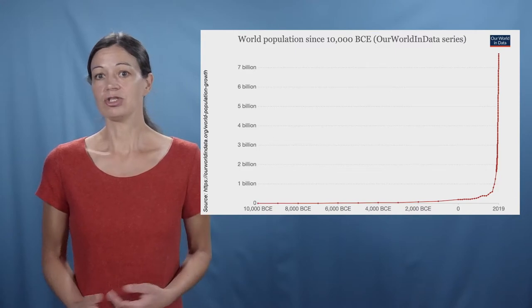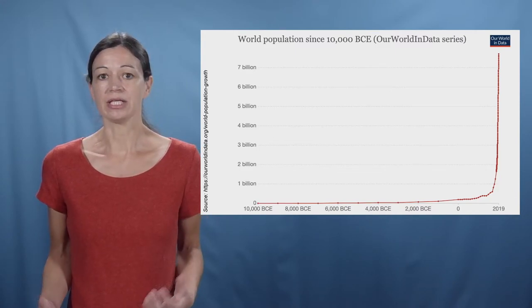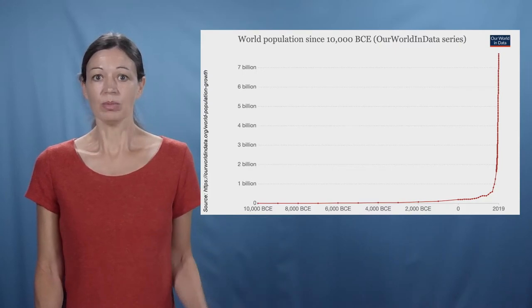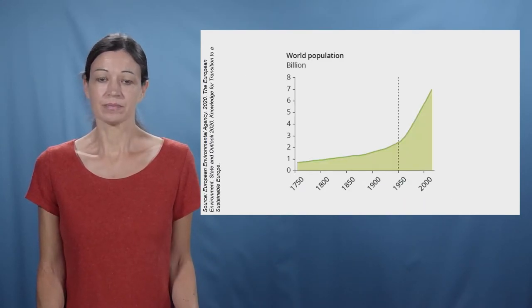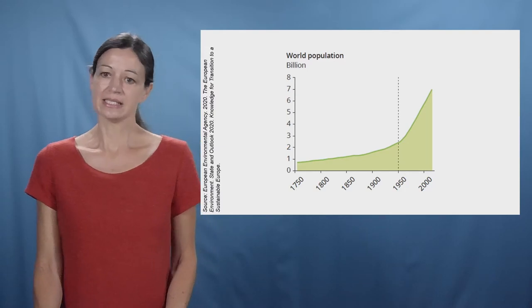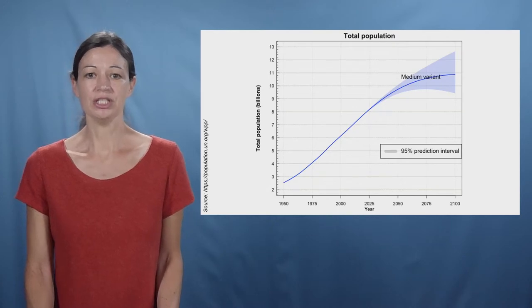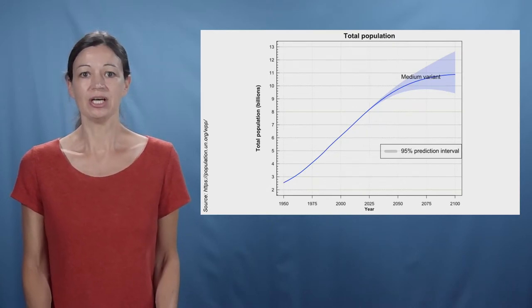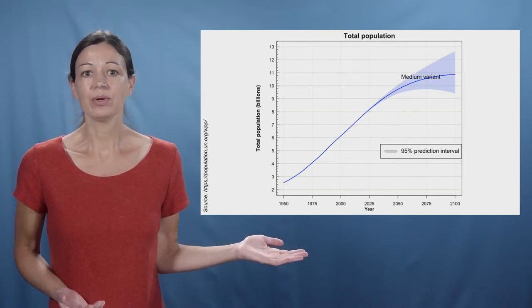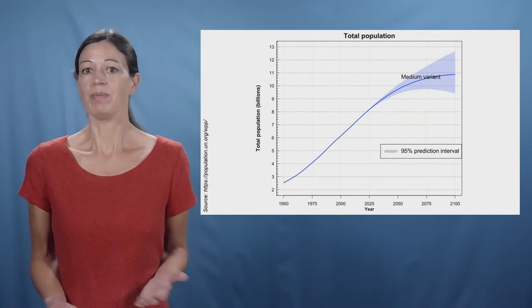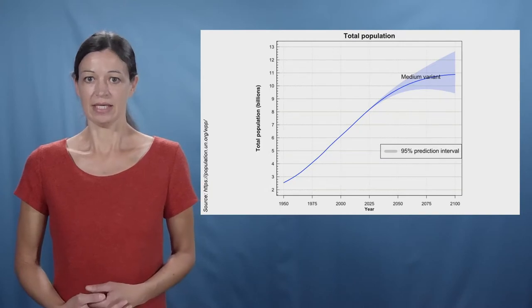One of the global mega trends is a growing world population. Since the early 19th century global population has soared, in particular since the 1950s. The United Nations predicts a continued growth of world population to at least 9.5 billion in 2100, from about 2.5 billion in 1950.